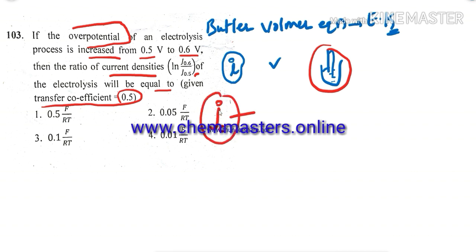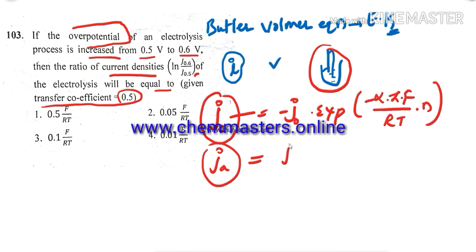That is simply we consider it as cathodic current density, which is given as minus J0 into exponential minus alpha Z into F by R into T into eta. And next we can say JA, here what is JA, simply anodic current density, and which equals to J0 exponential 1 minus alpha Z into F by R into T eta. Just write down for convenience alpha C and alpha A.